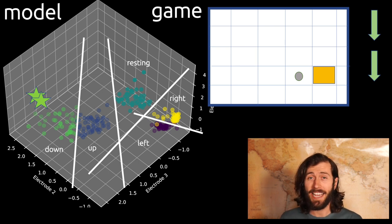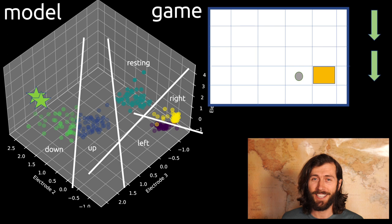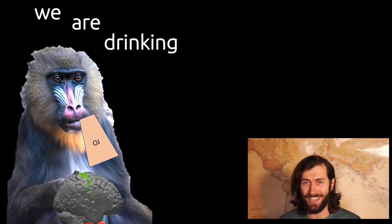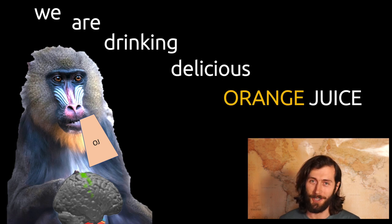And at the end, the monkey has to move to the right, you know the story. The activity in his brain says he wants to move to the right. The game is sent the command, and the cursor moves. And in the end, we are drinking delicious orange juice.